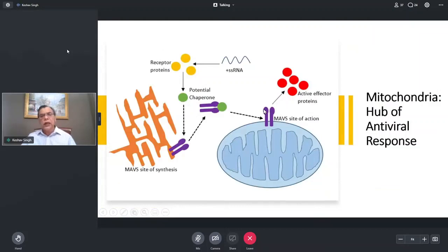So other thing what we need to realize, which has become very well established, is that the mitochondria seems to work as a hub of antiviral response. So you have MAVS, which is the mitochondria-associated antiviral signaling proteins. And what happens there, that they're together with a potential chaperone, which we don't know what it is, they get to the mitochondrial membrane, and that triggers the whole cascade of events, which can lead to the activated effector proteins and getting rid of the viral response.